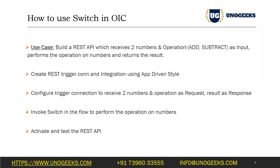So in case the client sends an operation as add, the switch operator sends it to the add branch. In that add branch we will add up the numbers that were sent as input and we will send back the result. If subtract is passed as input, we will send the integration to a subtract path configured with switch, subtract number two from number one, and send the result back. The idea here is to explain how to use a switch in OIC.